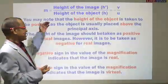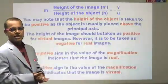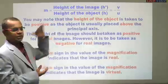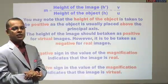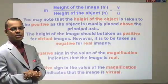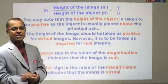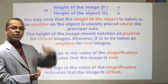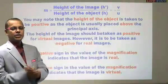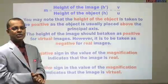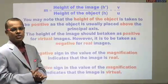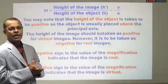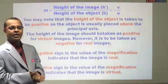And as per the conventions, Cartesian conventions, we have seen that the height of the object is always taken as positive. Do you know why? Because it is above the axis, principal axis. Since it is above the principal axis and perpendicular to that, it is to be taken as positive. And similarly, height of the image should be taken as positive for virtual, positive for virtual and negative for real images.